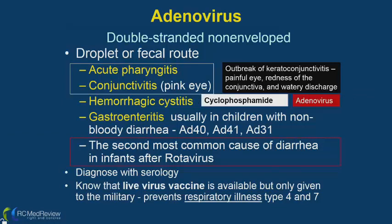Cyclophosphamide is mentioned here because one of its side effects is hemorrhagic cystitis — connecting it to the adenovirus discussion. Cyclophosphamide is an immunomodulatory medication used in conditions such as systemic lupus and other connective tissue diseases.